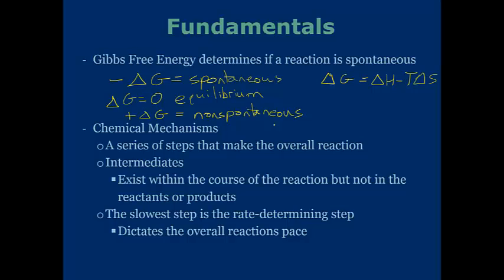In terms of chemical mechanisms, these mechanisms are the series of steps that make an overall reaction. A lot of chemical reactions and mechanisms are going to happen in multiple steps, not all at once, which is why there are things such as intermediates, which exist within the course of the reaction, but not in the reactants or the products.